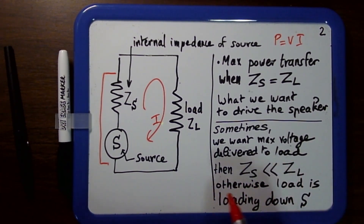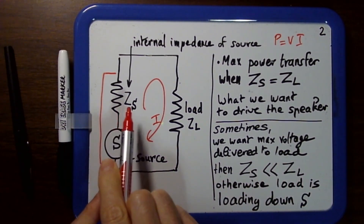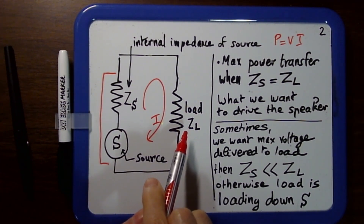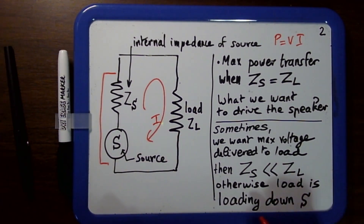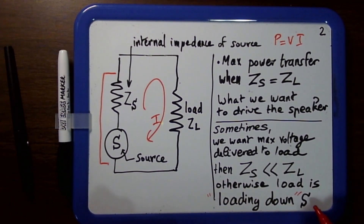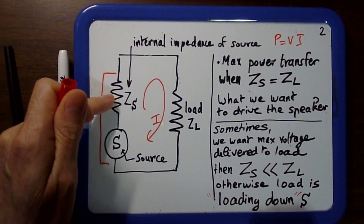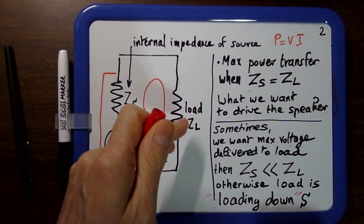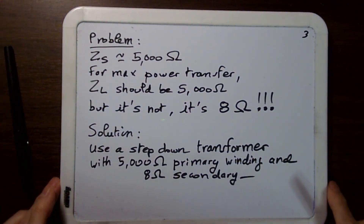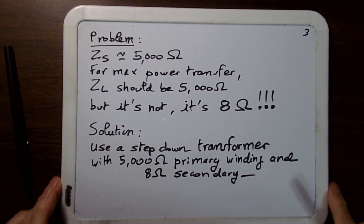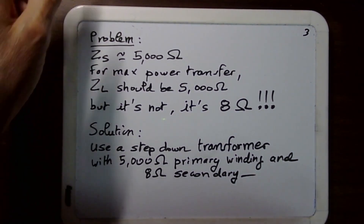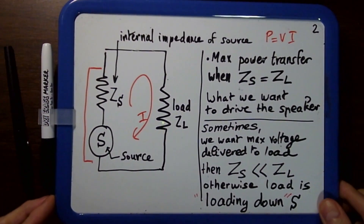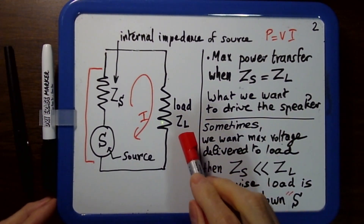If Zs is relatively large compared to Zl, we say the load is 'loading down' the source. There's too much voltage drop across the source, so there's not enough voltage delivered to the load. In our case, the load is the speaker.